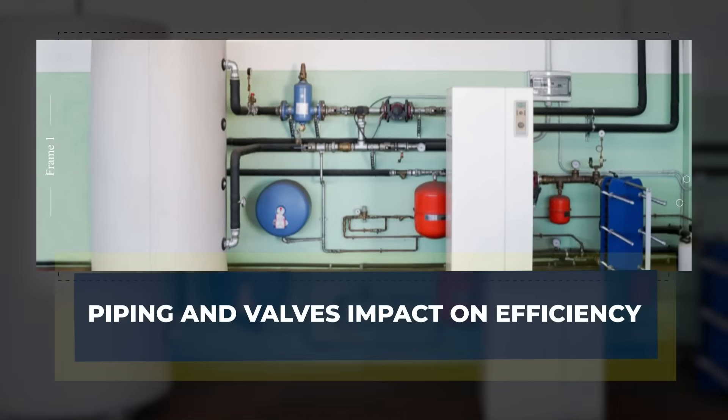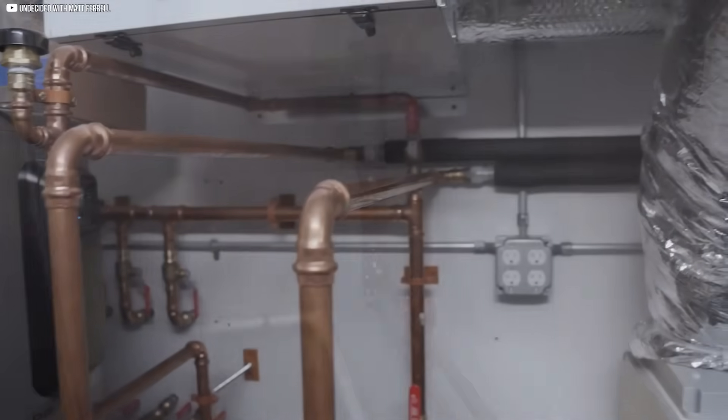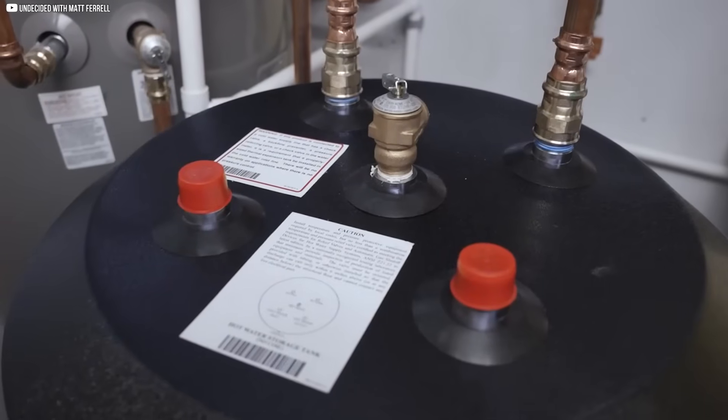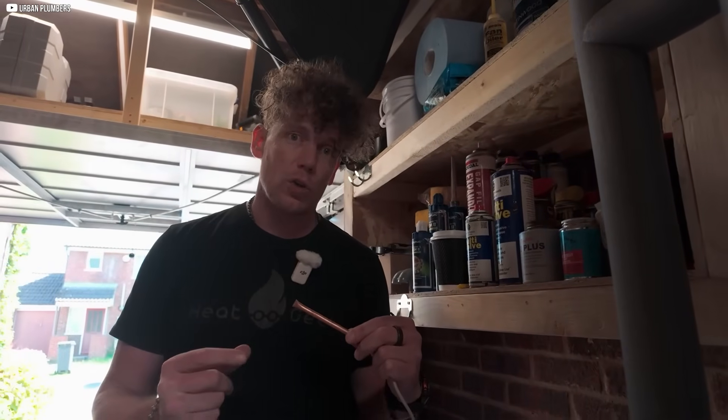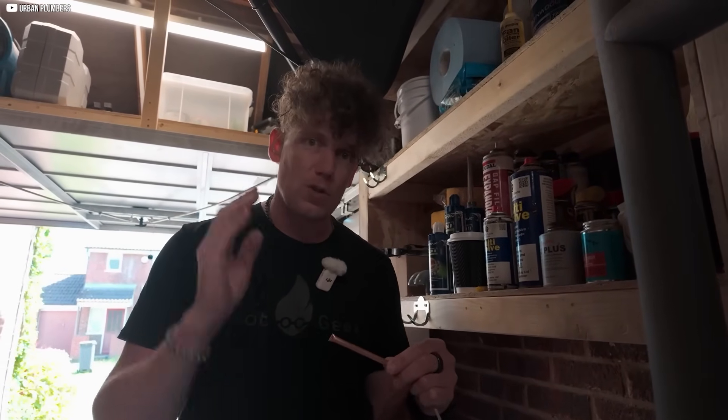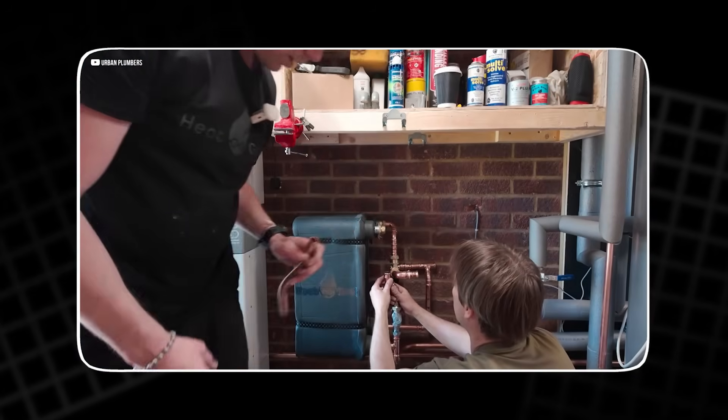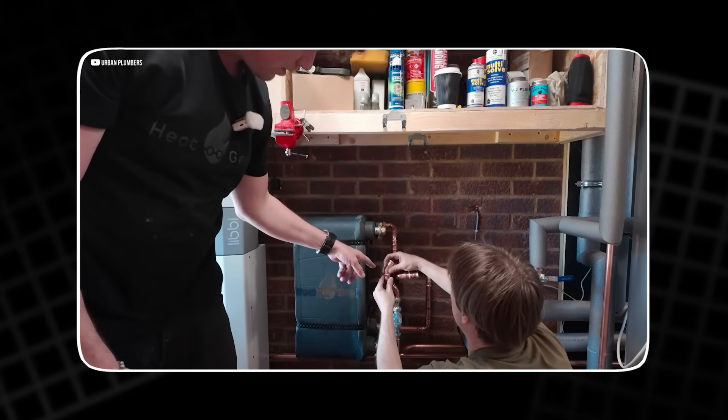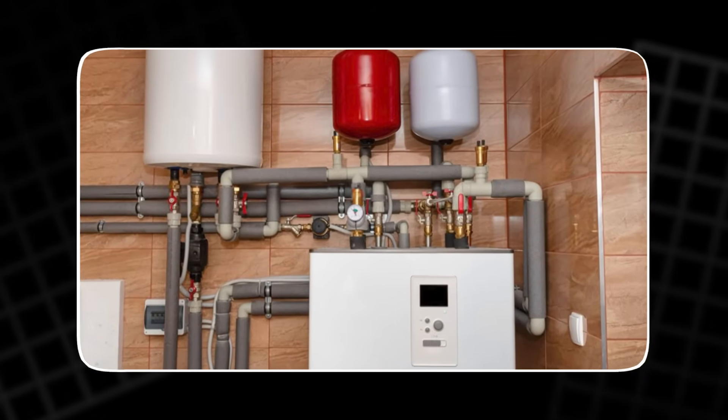Piping and valves impact on efficiency. The materials and layout of the piping in a heat pump system are essential to achieving peak efficiency. Adam Chapman emphasizes that using high-quality materials for the pipes, such as copper, is crucial for reducing energy loss. Copper pipes have a larger internal diameter and smoother bends compared to plastic alternatives, which means the water flows more easily.